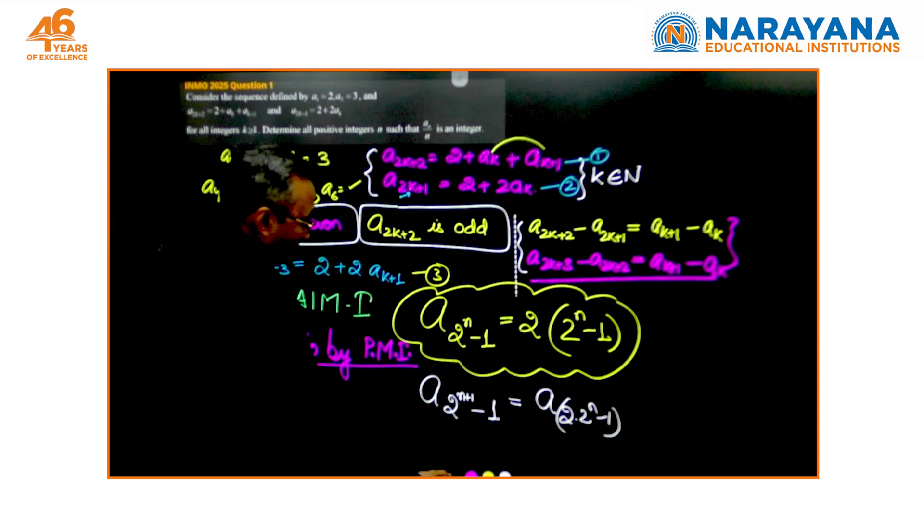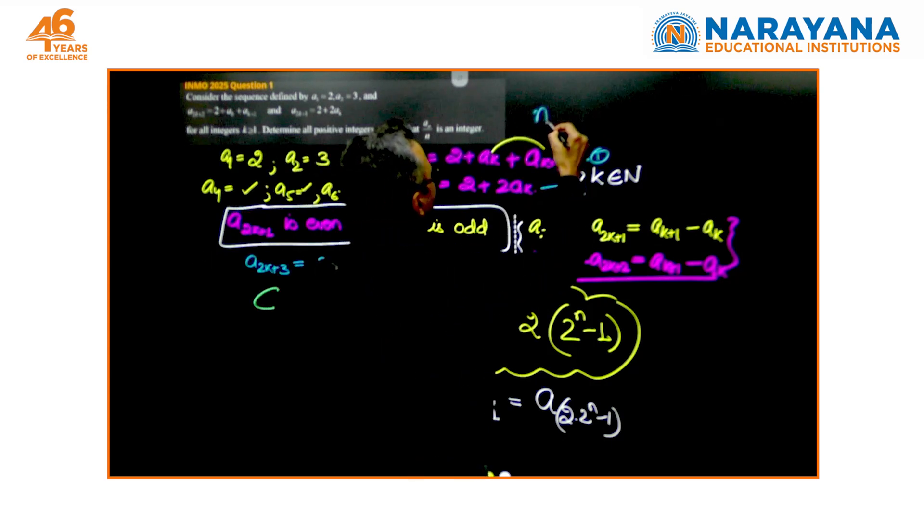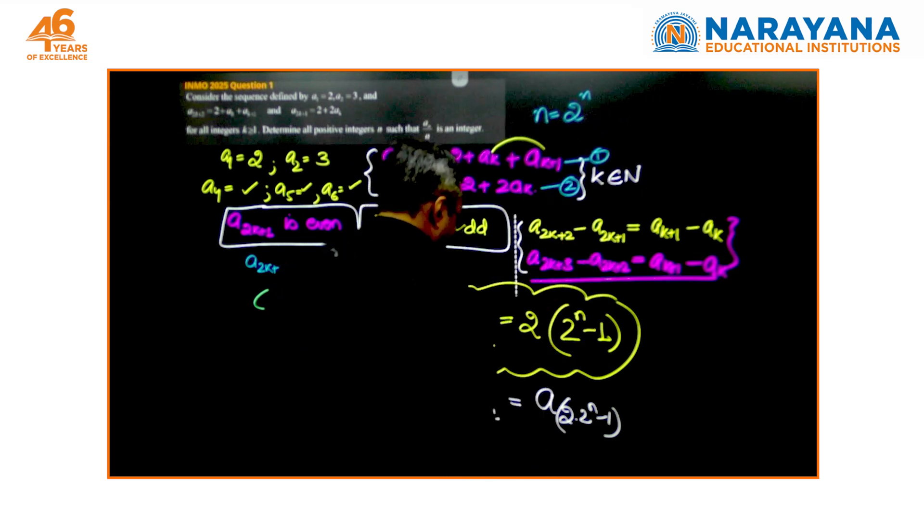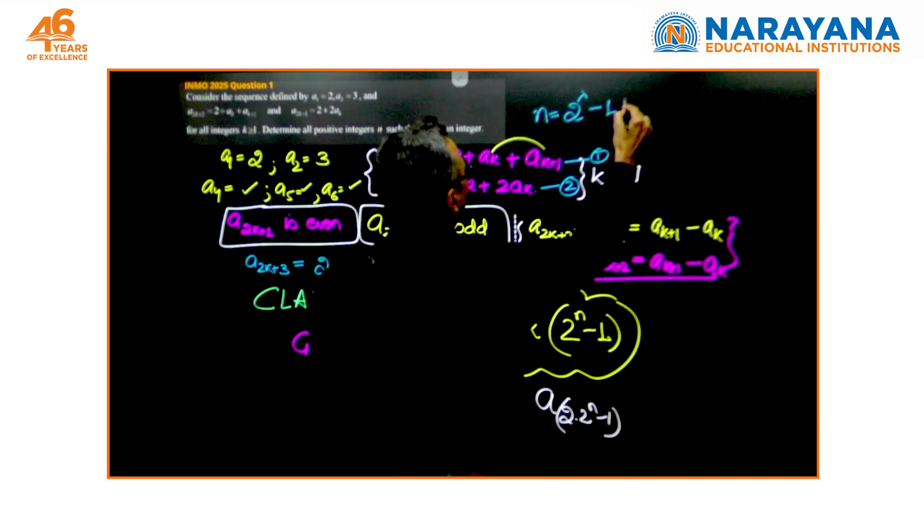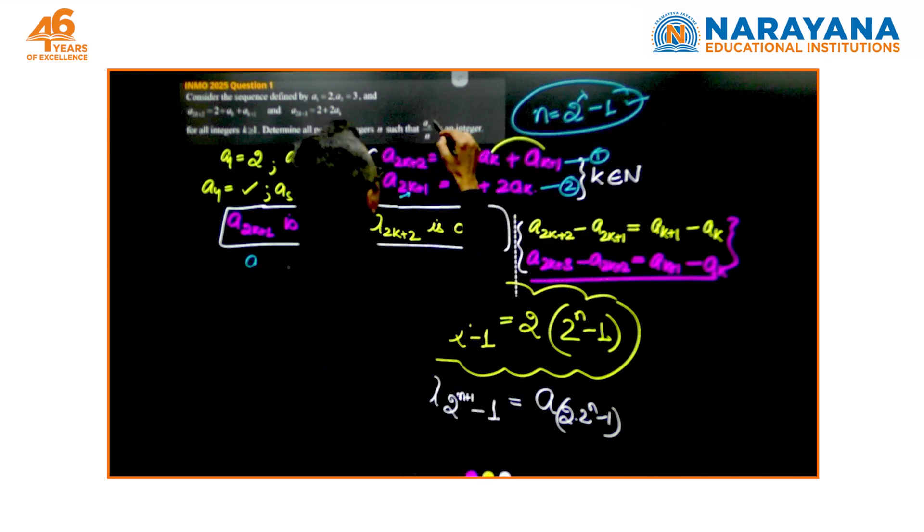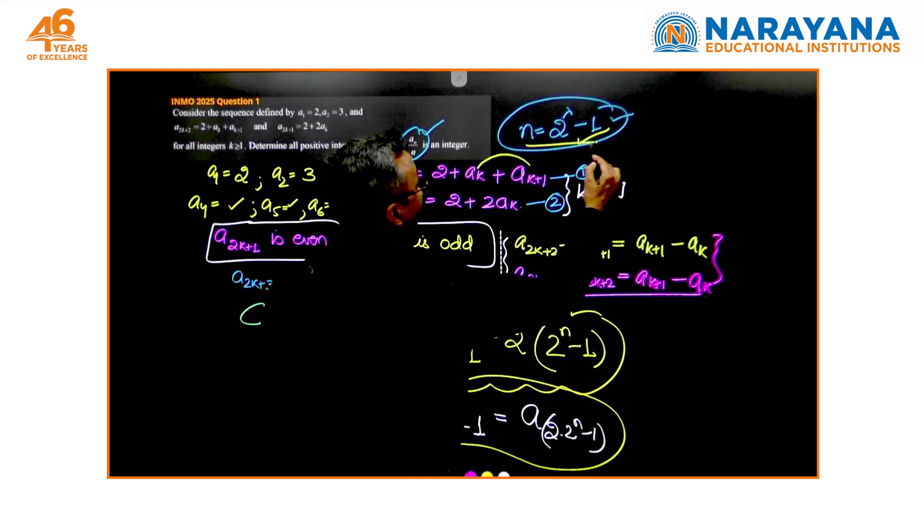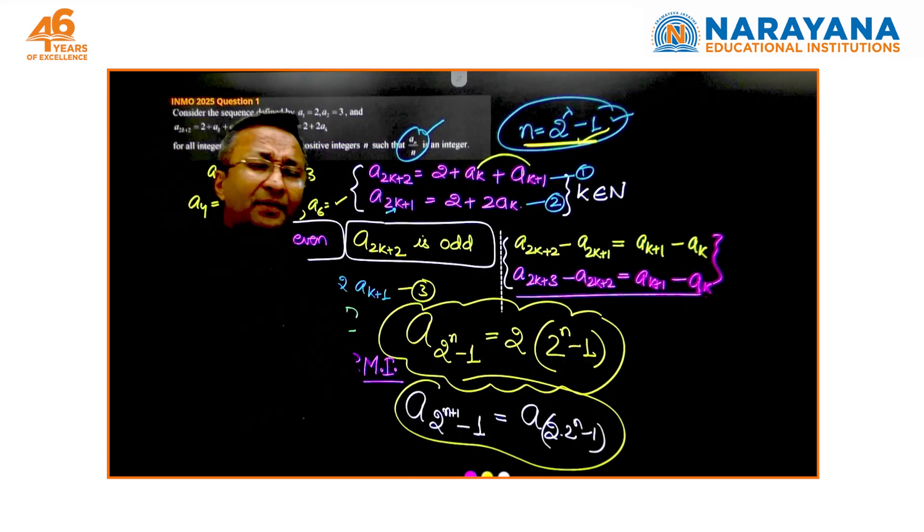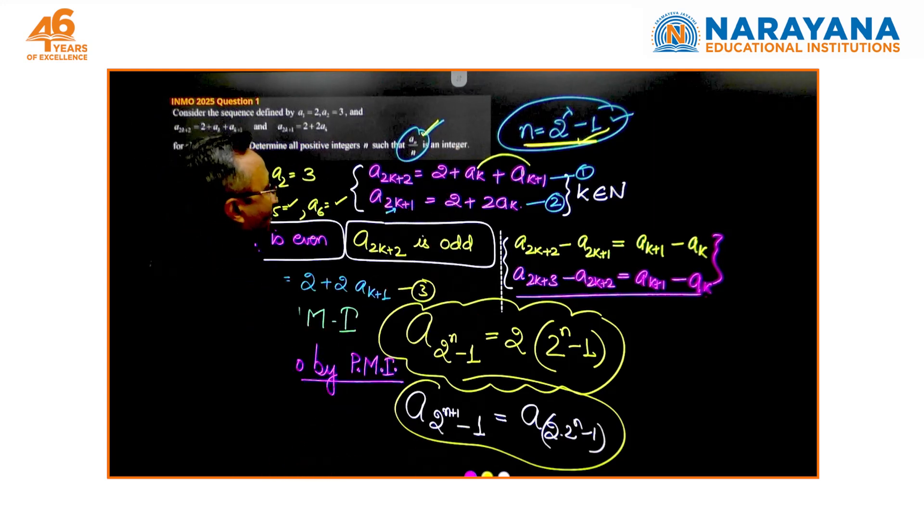So one particular solution to this entire question is that any n of the form 2^λ minus 1 is definitely a solution because then it is an integer. We have concluded for n of the form 2^λ - 1, an/n is an integer.